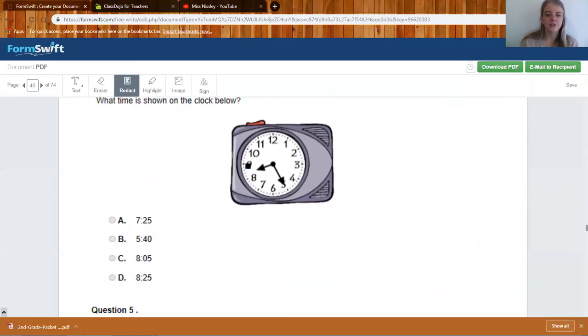What time is shown on the clock below? The little hand shows the hour, so it's in between the eight and the nine. So it is eight. It's either C or D. When our minute hand is on the five, we can count by fives to figure out the minutes. 5, 10, 15, 20, 25. It is 8, 25. You should have marked D.